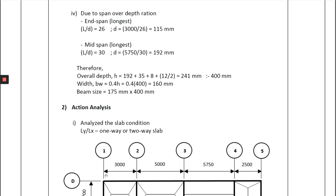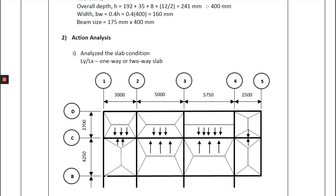The next process is action analysis. To do this, we first have to analyse the slab condition — either one-way or two-way slab. In my case, analysing beam C1-5, we have to analyse all slabs connected to this beam by calculating LY/LX. If it is less than 2, it is a two-way slab; if more than 2, it is a one-way slab. I have seven two-way slabs and one one-way slab.